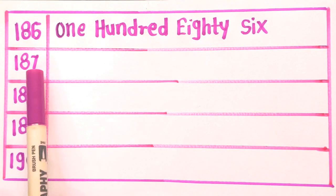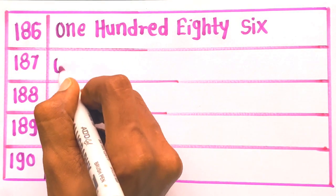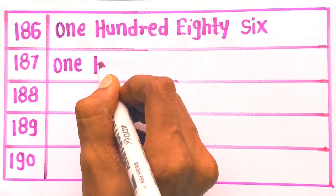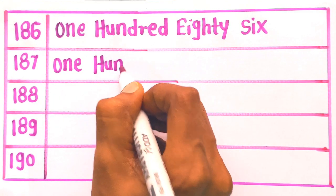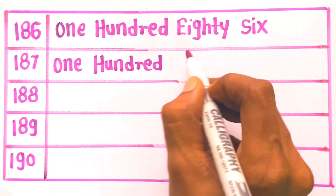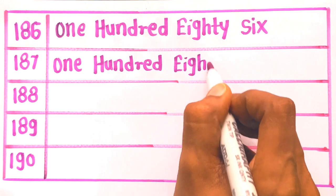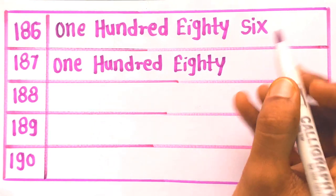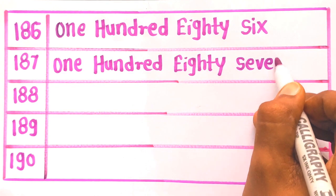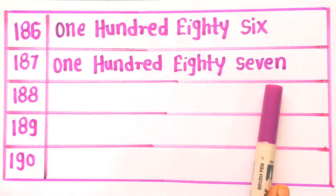Next is 187: O, N, E — 1. H, U, N, D, R, E, D — 100. E, I, G, H, T, Y — 80. S, E, V, E, N — 7. One hundred eighty seven. 187.